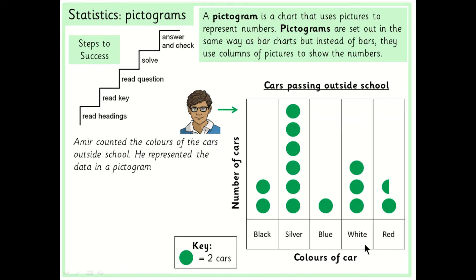Now be careful you don't just want to count the dots because I could look here and go oh silver number of cars one two three four five six there's six no no no no. You must read the key which is over here. Now the key tells you how many one picture represents.